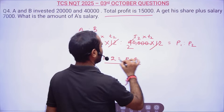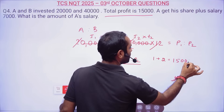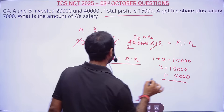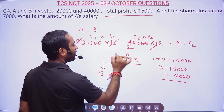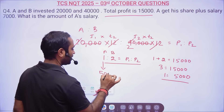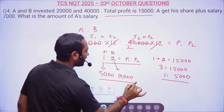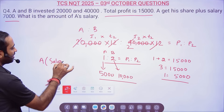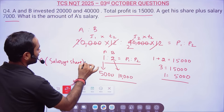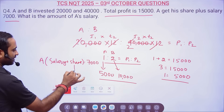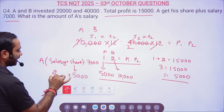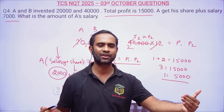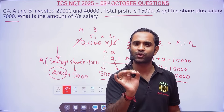Total profit is 15,000, and the ratio is 1:2, so 1+2 = 3 units = 15,000. Therefore 1 unit = 5,000. So A's profit share is 5,000 and B's is 10,000. Now the question says A gets salary plus his profit share = 7,000. Since A's share is 5,000, the salary must be 2,000. Select 2,000 if option-based, or enter 2,000 in the fill-in-the-blanks box.